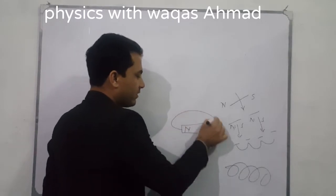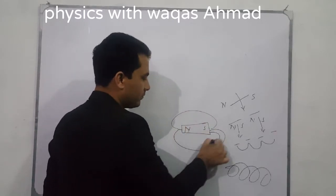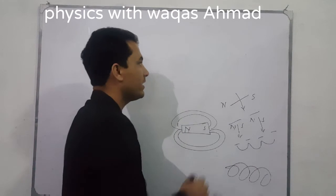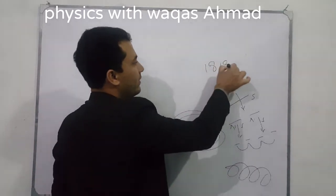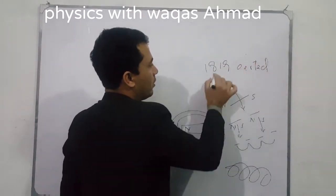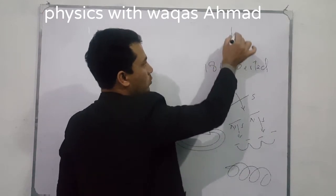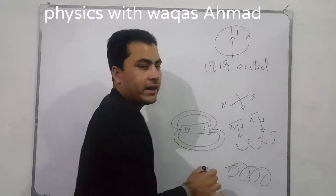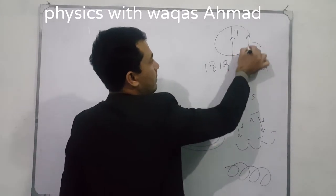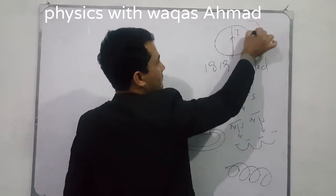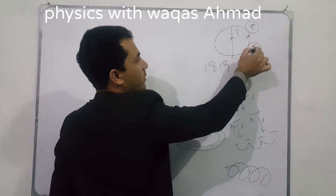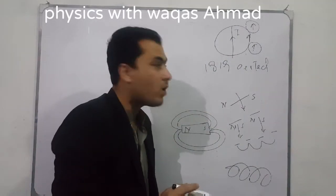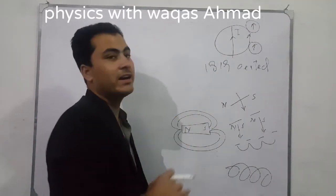Around a permanent magnet there is a magnetic field, and around a current-carrying wire there is also a magnetic field. In 1819, Oersted confirmed for the first time that whenever you pass an electric current through a wire, a magnetic field is produced around that wire. When you place a compass near that wire, the needle is deflected due to the influence of that magnetic field.